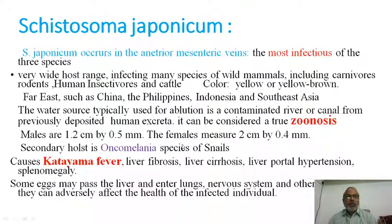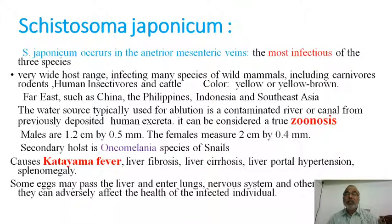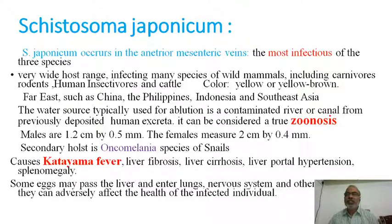Schistosoma japonicum causes a characteristic disease called Katayama fever, manifested with liver malfunctions, liver fibrosis, liver cirrhosis, and portal hypertension. The spleen also gets damaged and enlarges. Some eggs may pass through the liver and enter the lungs, nervous system, and other organs, adversely affecting the health of the infected individual. It is the most severe species among the three Schistosoma species.